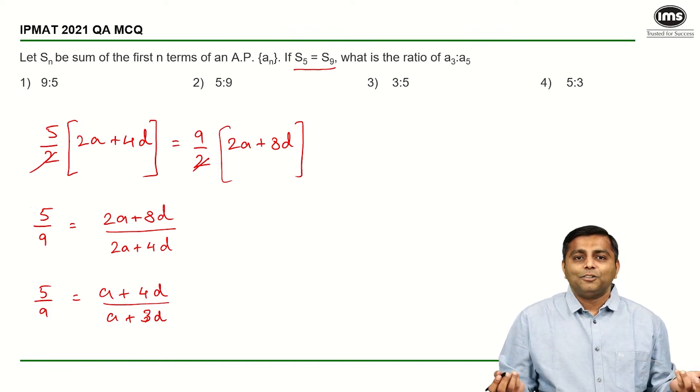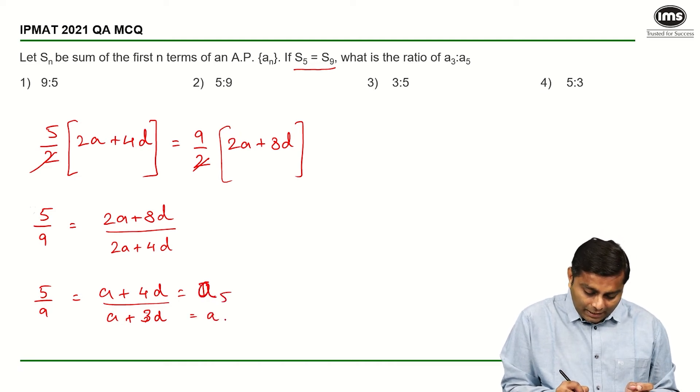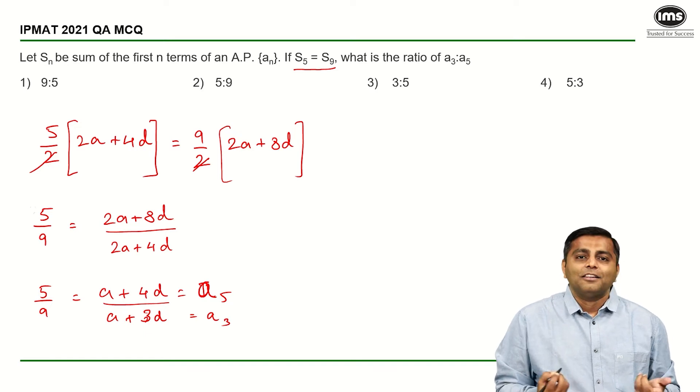And you are done. A plus 4D is nothing but T₅ or rather A₅ and this is nothing but A₃. Simple.